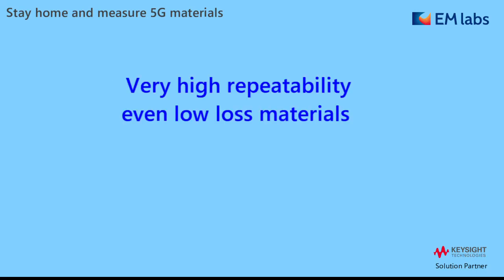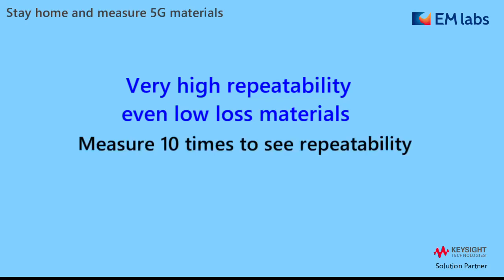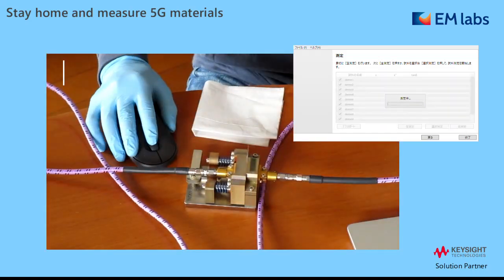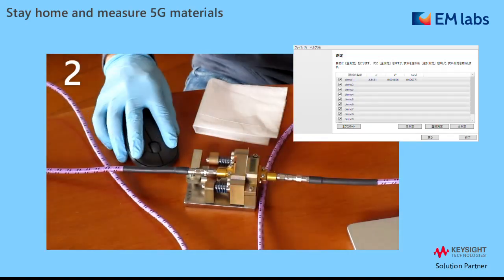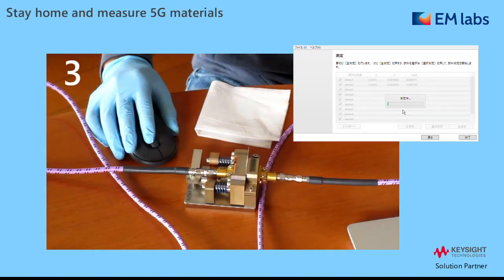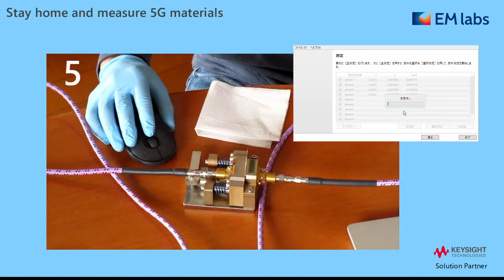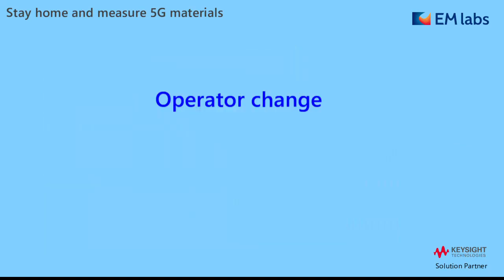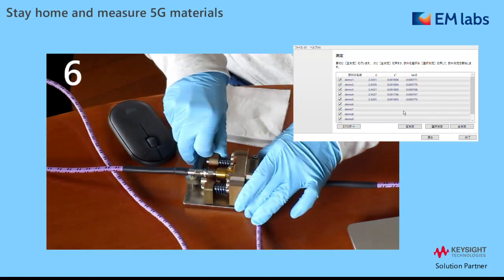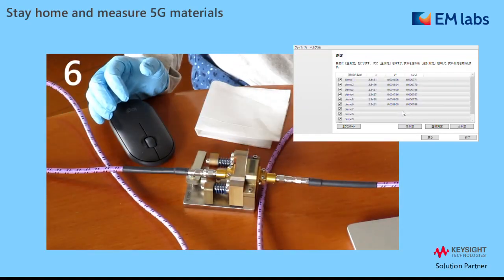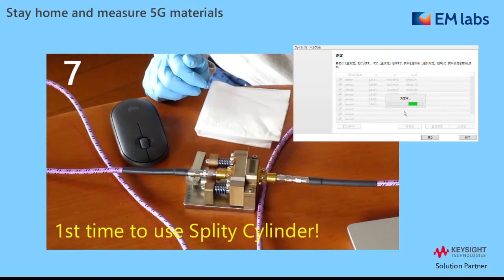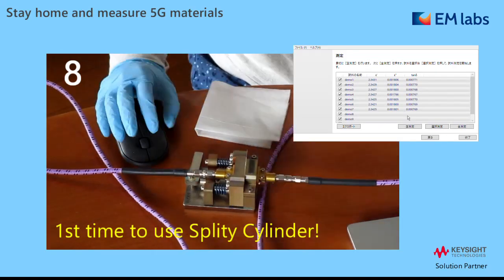Finally, I'd like to show you the excellent repeatability, which allows you to evaluate low-loss materials required for the 5G market very precisely. To show that, I'm going to measure 10 times. Changing the operator here — as I stay home, I ask my wife to try the split cylinder. This is her first time, but it is going very well.